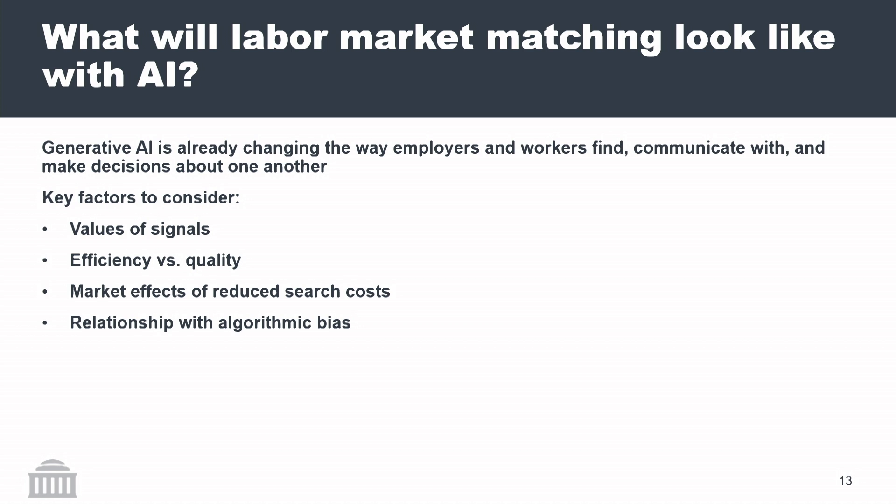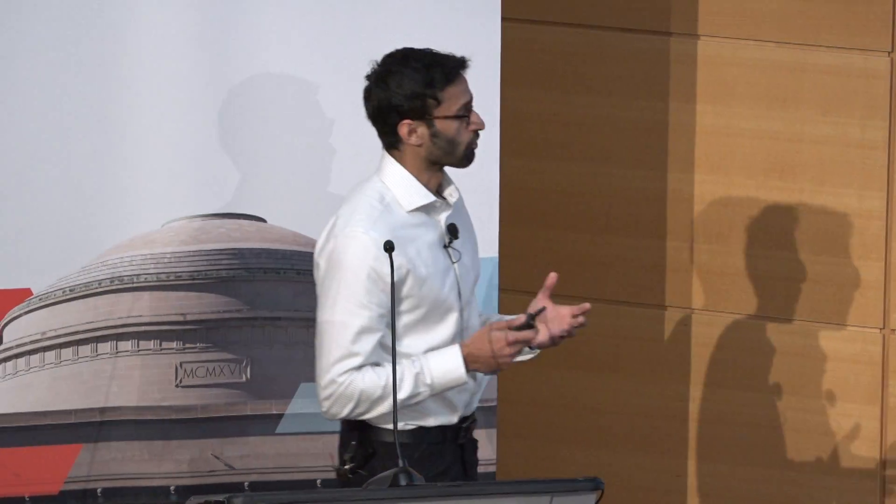I want to conclude with a summary of what this labor market looks like in the age of AI. I've presented positive and negative versions of each scenario. There are some key factors worth considering: the value of signals — what signals do we find valuable and what signals are losing their information as we use AI? There's a question about efficiency versus quality — do we want quick decisions or do we care about finding truly the best candidates? There are broader market effects as search costs reduce and application volume goes up. And there's the relationship to algorithmic bias — as we do more with historical data as our basis for truth, we should worry about where that historical data came from.